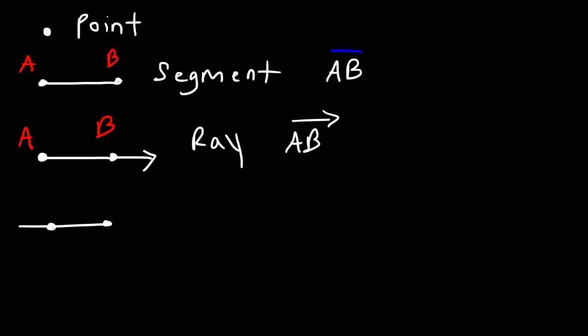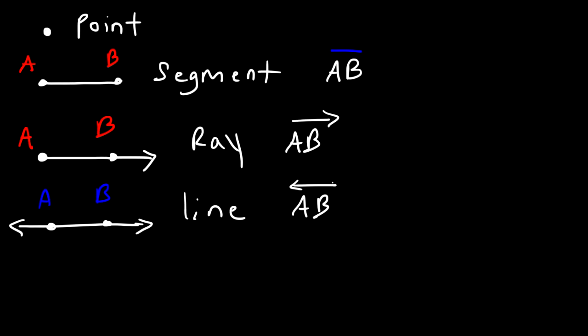A line has no beginning and no end. You can write this as line AB with two arrows.